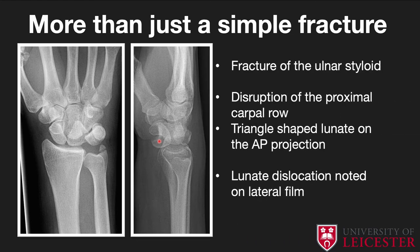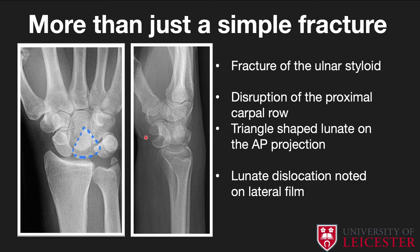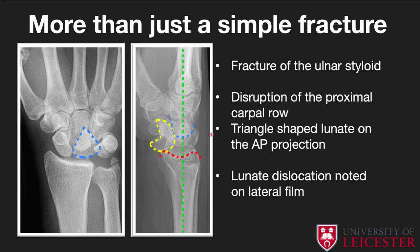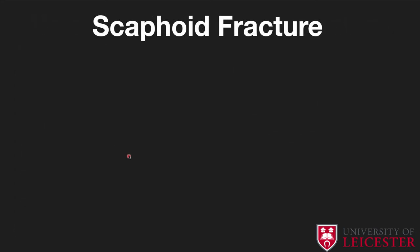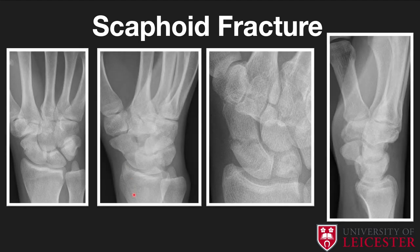The triangular pattern is called the pi sign. It can indicate either a lunate dislocation, as shown here, or a peri-lunate dislocation. Both indicate significant disruption of the proximal carpal row. Diagrammatically, the lunate should be the teacup on the distal radius saucer, but here the teacup has flipped, while the capitate egg remains, producing the classical pie shape.